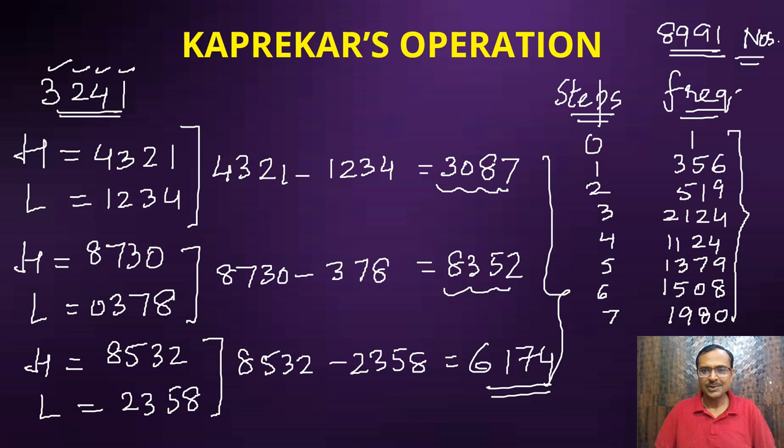So the maximum number of steps required to get to 6174 is seven steps - 1980 numbers require seven steps to get to 6174. That is the maximum number of steps. So if you take any random four-digit number, not 1111, 2222, 3333, 4444 like this - you can't take all four digits as the same - and do this operation, then in maximum seven steps you are bound to get 6174. That is Kaprekar's operation.